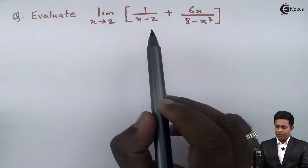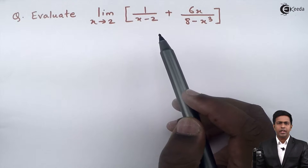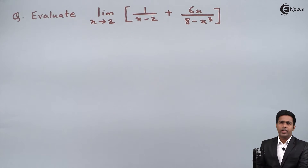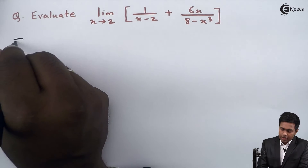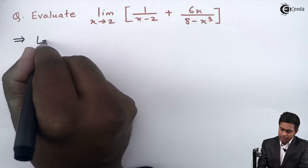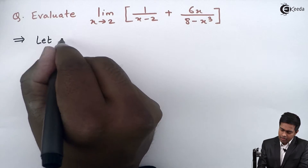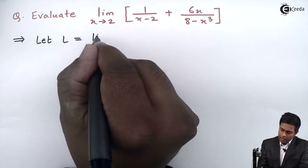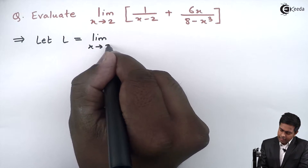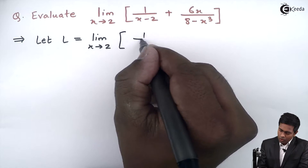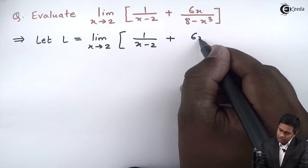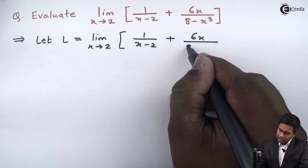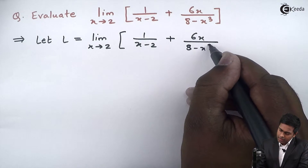Whenever we have an algebraic function in a limit, we always start with the direct method. So let's start with the direct method. I will assume this given limit as L. So L equals limit x tends to 2 of 1/(x−2) + 6x/(8−x³).